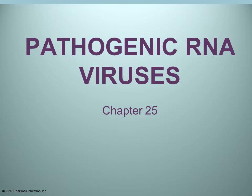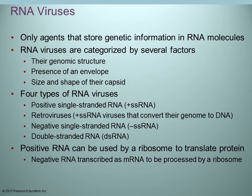This is chapter 25. It deals with the pathogenic RNA viruses. RNA viruses are the only type of organism or agent that carries genetic information in RNA. Usually genetic information is stored in DNA, but RNA viruses don't have any DNA, so they're going to store it in the RNA.